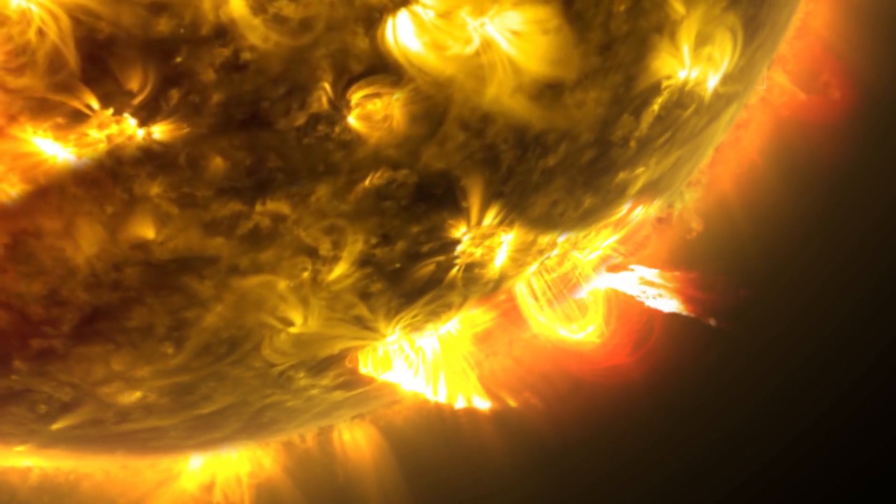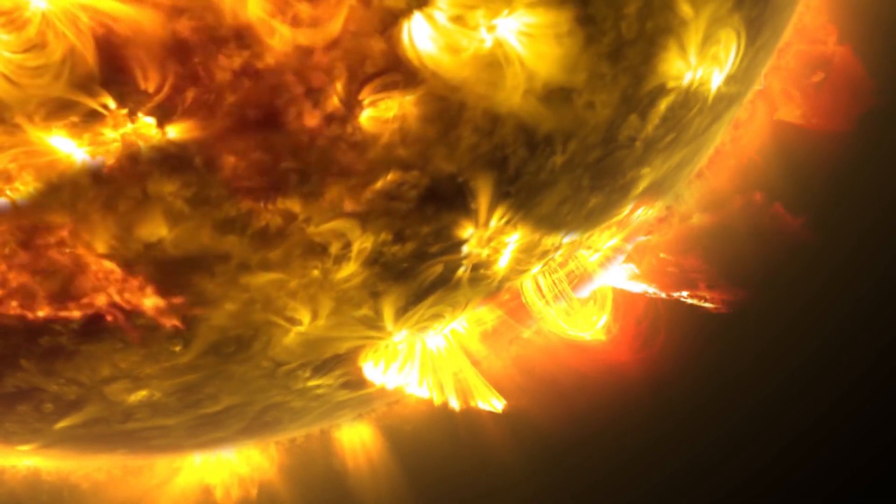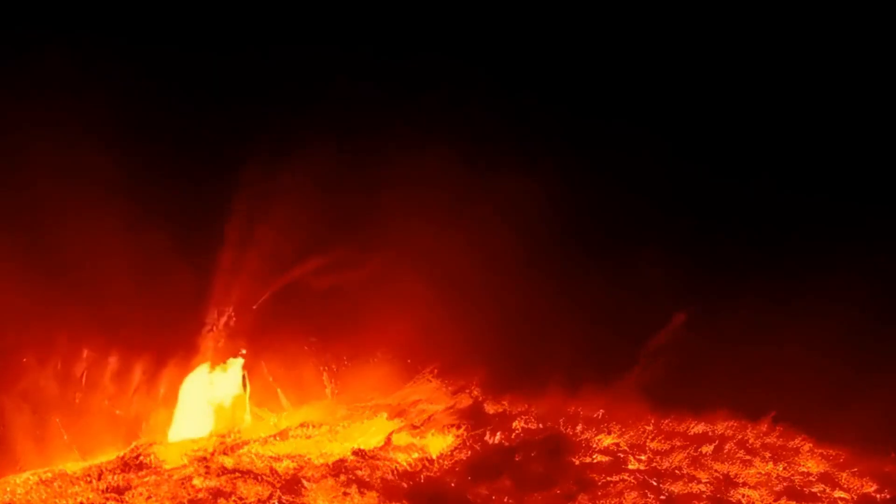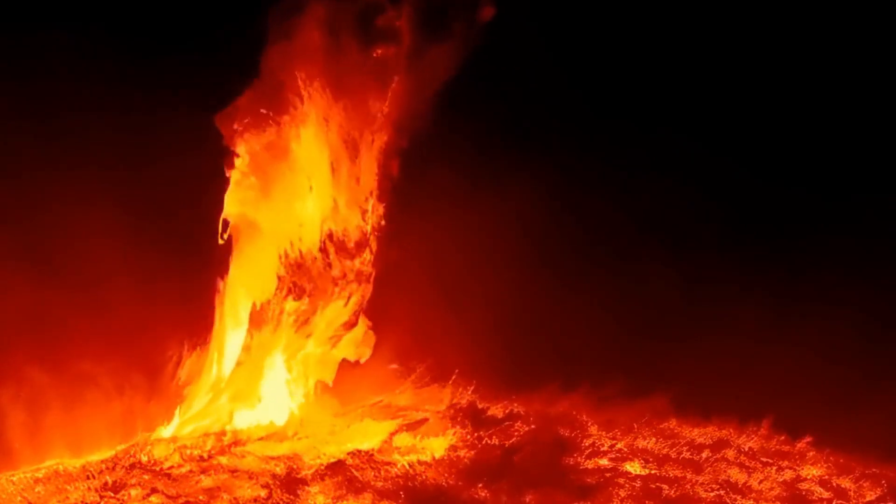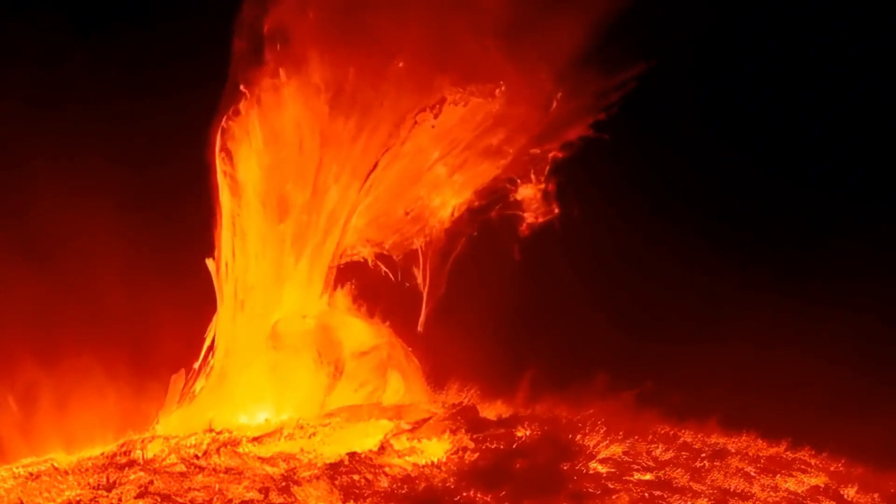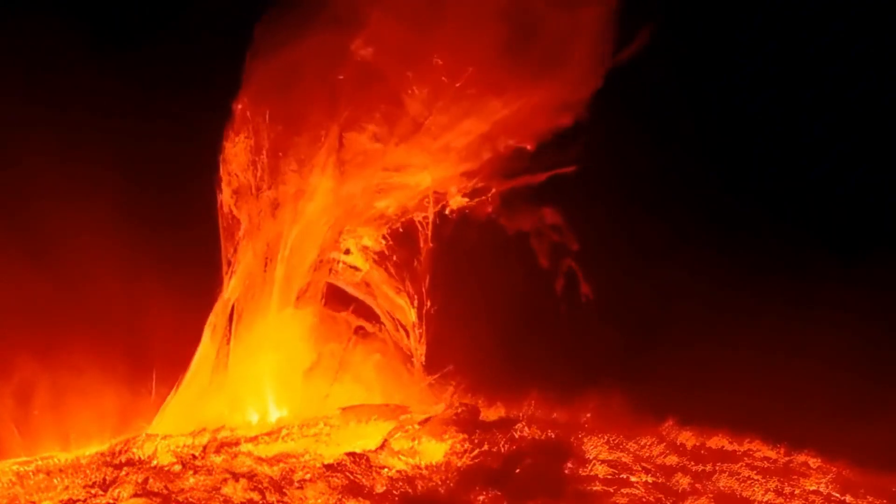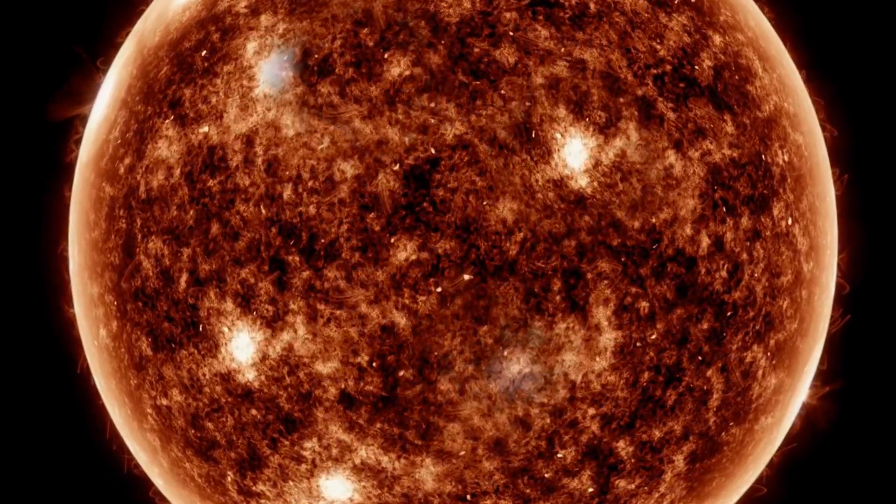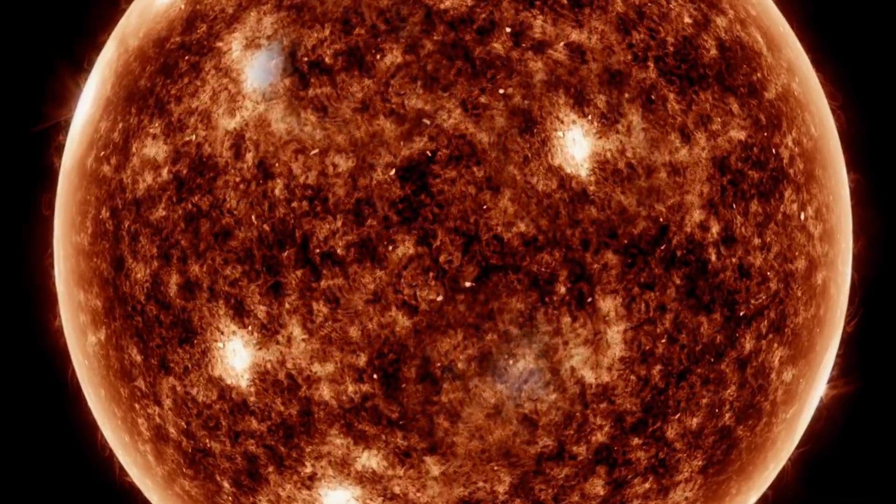The Sun is essentially a giant self-sustaining MHD system. Plasma movement inside the Sun generates powerful magnetic fields, which then influence the plasma's behavior, creating a constant feedback loop.